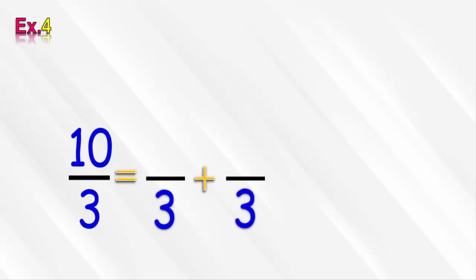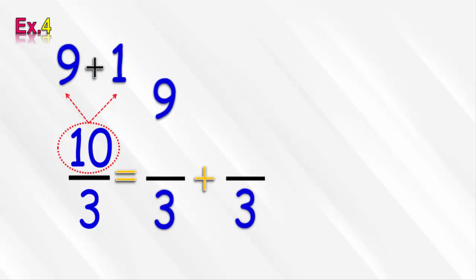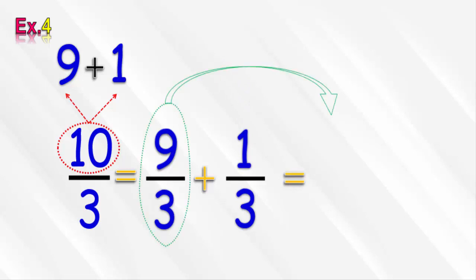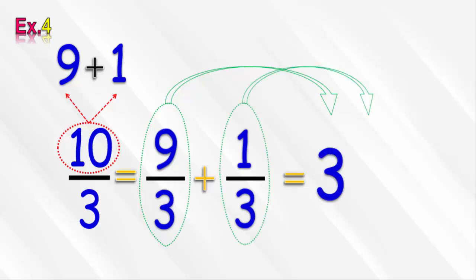Then we write the numerator 10 in the form of the sum of 2 numbers as 9 plus 1. Then we put 9 in the numerator of the first fraction and 1 in the numerator of the second fraction. Now we write the first fraction 9 over 3 in the form of the whole number 3. Then we write the fraction 1 over 3 beside the whole number. So we get the mixed number 3 and 1 over 3.